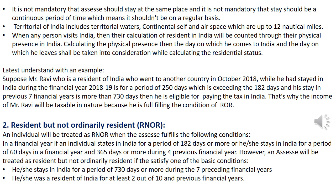For example, Mr. Ravi, who is a resident of India, went to another country in October 2018. He stayed in India during financial year 2018–19 for a period of 250 days, which is more than the required 182 days. His stay in the seven previous financial years is also more than 730 days. Since he fulfilled both conditions, he is considered ROR and is eligible for paying tax in India.